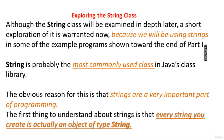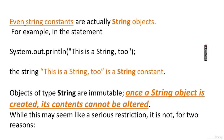String is probably the most commonly used class in the Java class library. The obvious reason is that strings are an important part of programming — without strings you cannot usually write a program. The first thing to understand is that every string you create is actually an object of type String — it is not a group of characters like in C and C++. Even string constants are actually String objects.